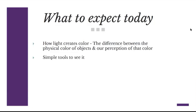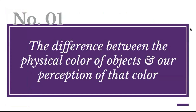Tonight we'll first talk about how light creates color, then the difference between the physical color of objects and our perception of that color. Then we'll cover some really simple low-tech tools you can use to actually see the color of the light impacting local color, and wrap up with seven steps to implement color creating light in your paintings.